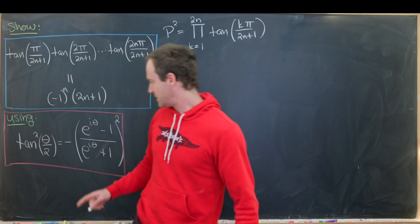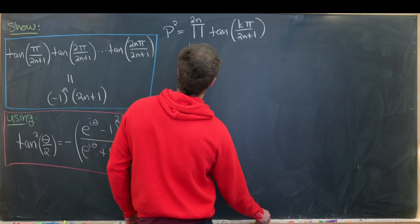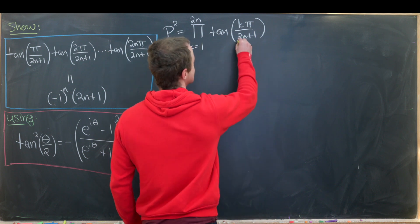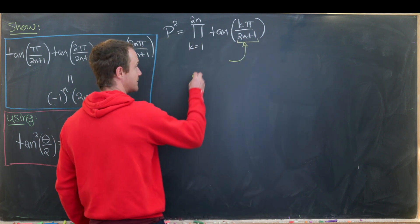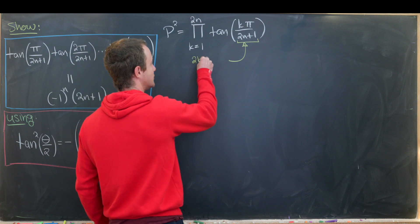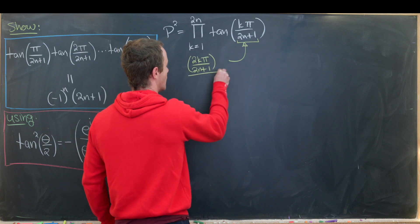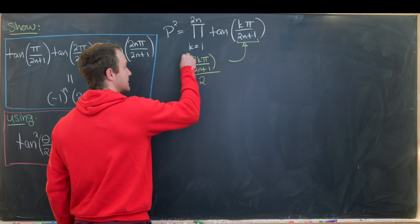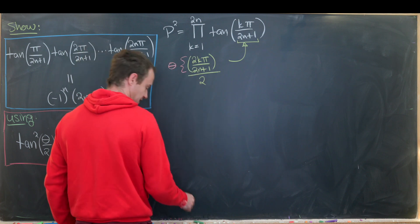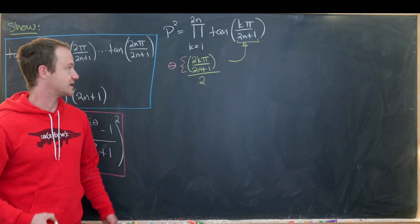But notice we need it to be of the form θ over 2. So how can we do that? Well that's actually pretty easy. Let's take the argument of this tangent and rewrite it a little bit. We'll write it as 2kπ over 2n plus 1 over 2. So that means in our formula right here this θ is being played by 2kπ over 2n plus 1.